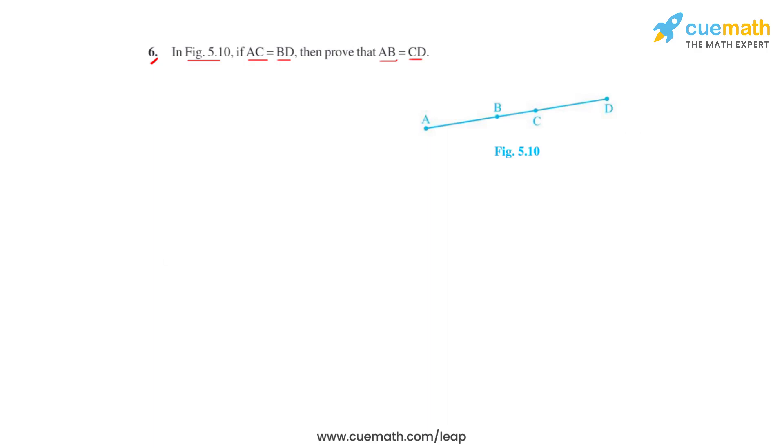As given in the question, we write AC equals BD. Now from the figure we can see that AC can be written as a sum of AB plus BC. So let's do that.